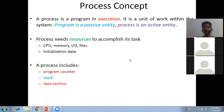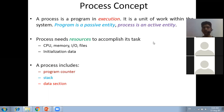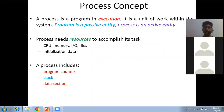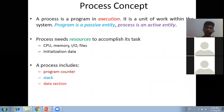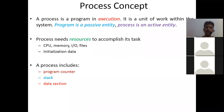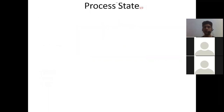So the process concept: a process is a program in execution, a unit of work within the system. Program is a passive entity whereas process is an active entity. A process needs resources to accomplish its task: CPU, memory, input/output, files, and initialization data. A process includes a program counter, a stack, and a data section.